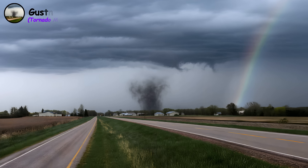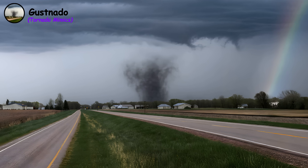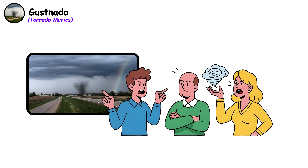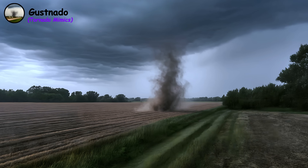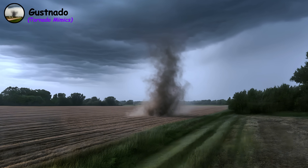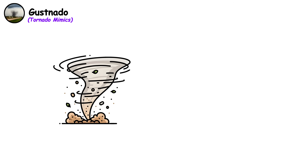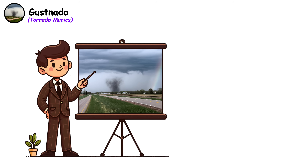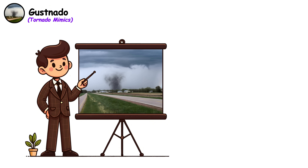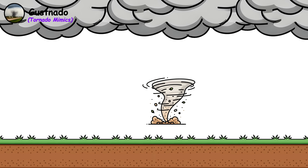Gustnado. A gustnado is a short-lived, low-level whirl that develops along the leading edge of a thunderstorm's downburst. Meteorologists debate whether it even qualifies as a true tornado. Although they may seem harmless and cluelessly wandering around, gustnados pose real dangers — they appear suddenly with no warning, catching people off guard, and they can even flip vehicles. The key distinction is that gustnados don't connect to the cloud base above, making them nearly impossible to predict or warn about effectively.